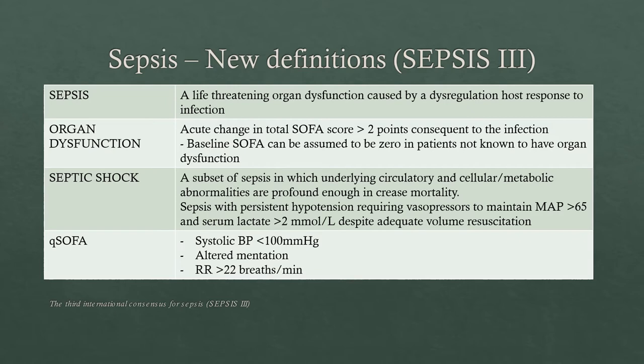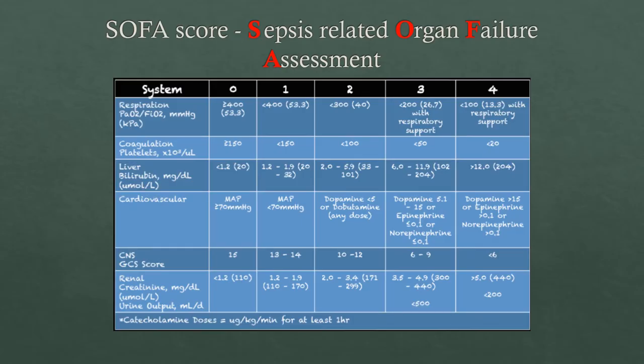The SOFA score stands for Sepsis-related Organ Failure Assessment. The full SOFA score is quite complicated and involves blood tests and other results. Each system gets a score, and the higher the score, the higher the risk of death essentially.